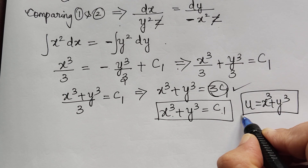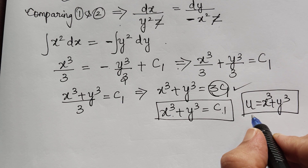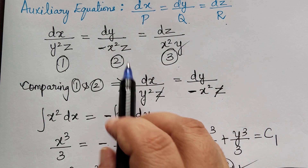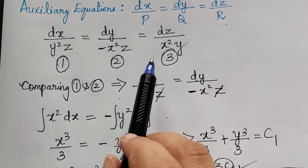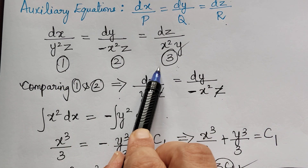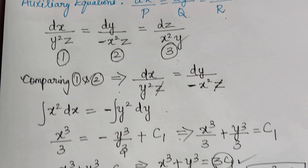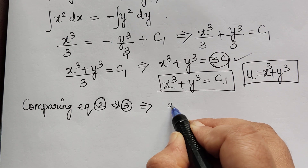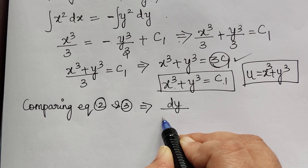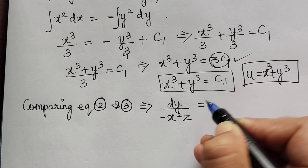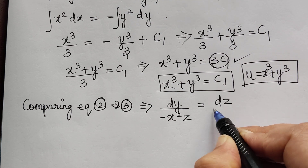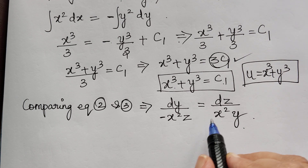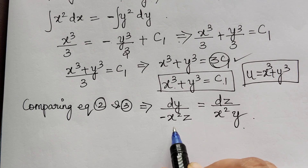We have obtained solution u. In a similar manner we obtain solution v by comparing another pair of equations. I am choosing to compare equations 2 and 3 — you may also choose 1 and 3. Taking equations 2 and 3: dy/(−x²z) = dz/(x²y). The x² cancels on both sides.